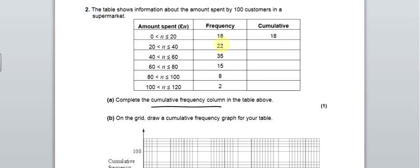we're 18. We add on 22. That gets us to 40. And then we add on 35. To get us to 75. I'm just adding the next number on. That gets us to 90. 98. And then 100. And that's good. Because there was 100 customers. And we've got 100 at the bottom. One mark.